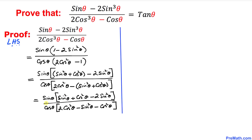Now let's further simplify. Writing sine theta outside and opening the brackets: sine square theta minus 2 sine square theta gives us negative sine square theta. So the numerator simplifies to sine theta times cosine square theta minus sine square theta.